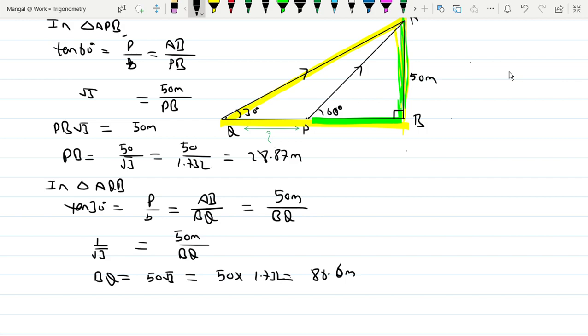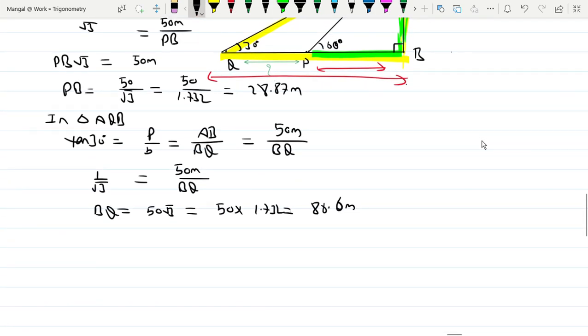Now BQ length minus BP length gives us PQ. The distance between the two points is what we need to find. So PQ equals BQ minus BP.